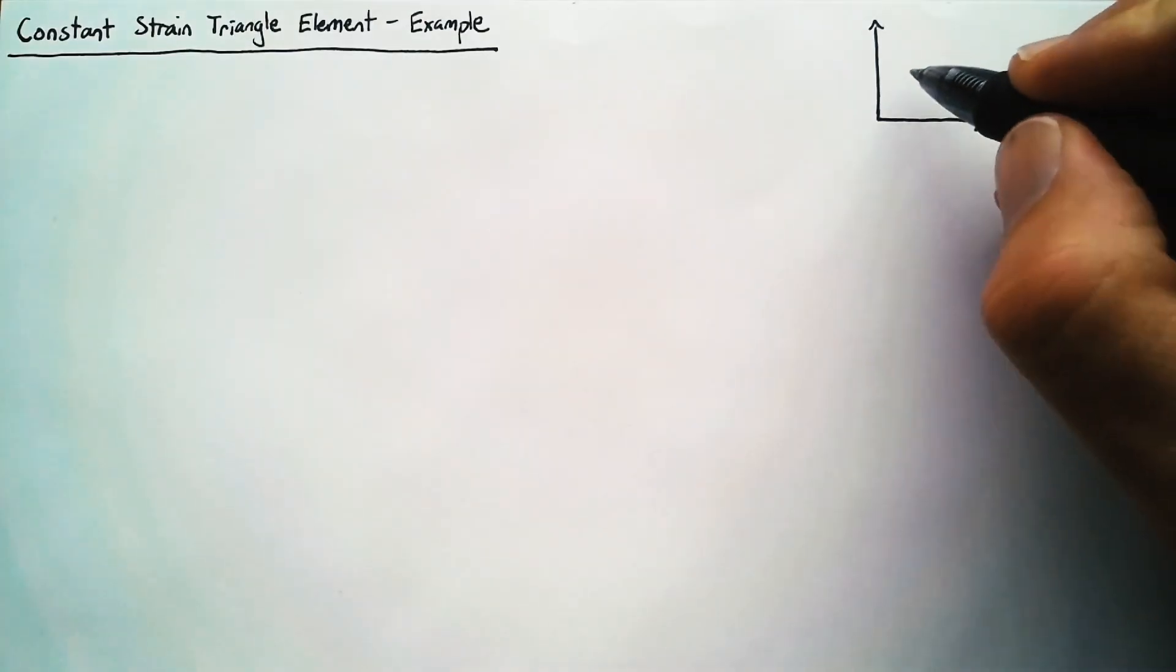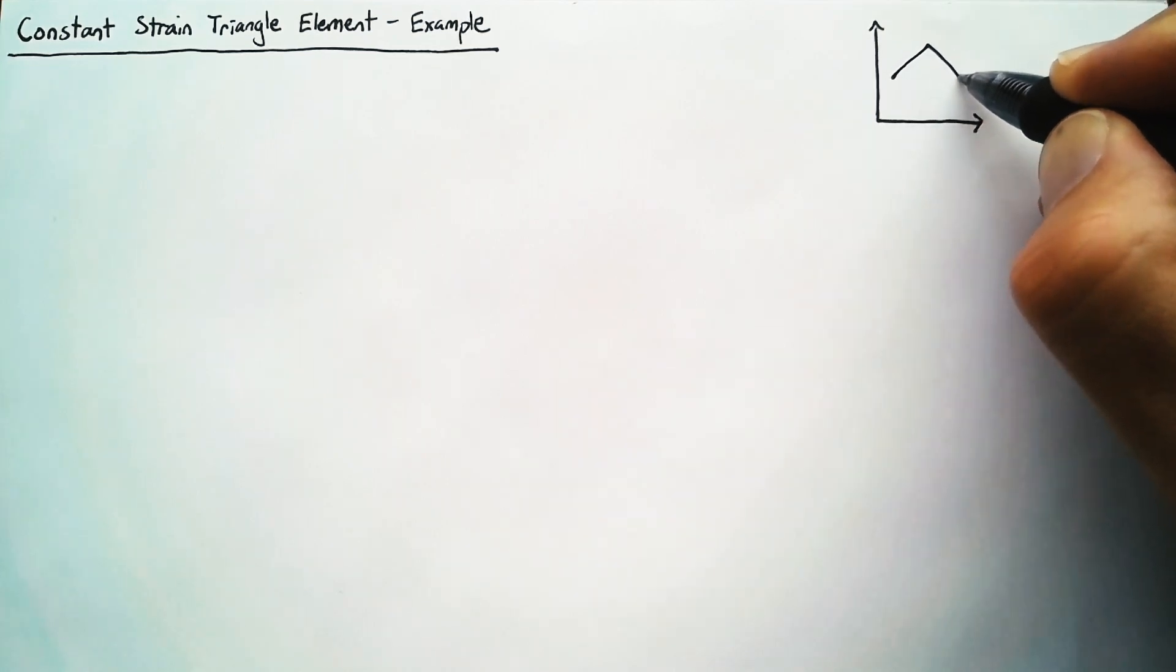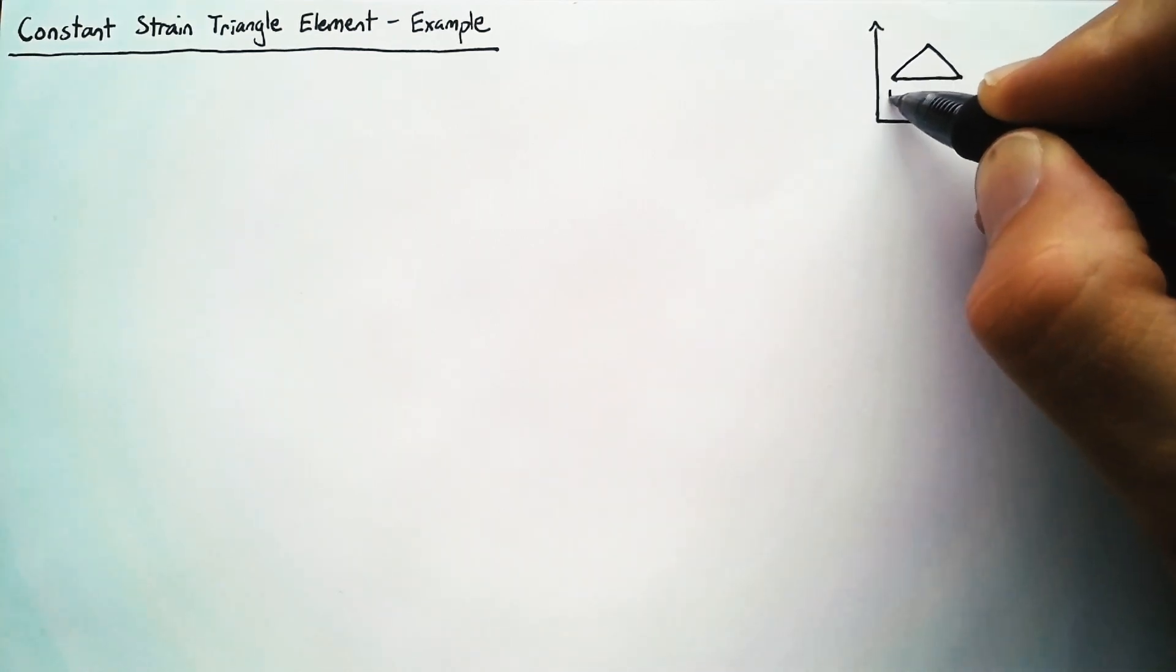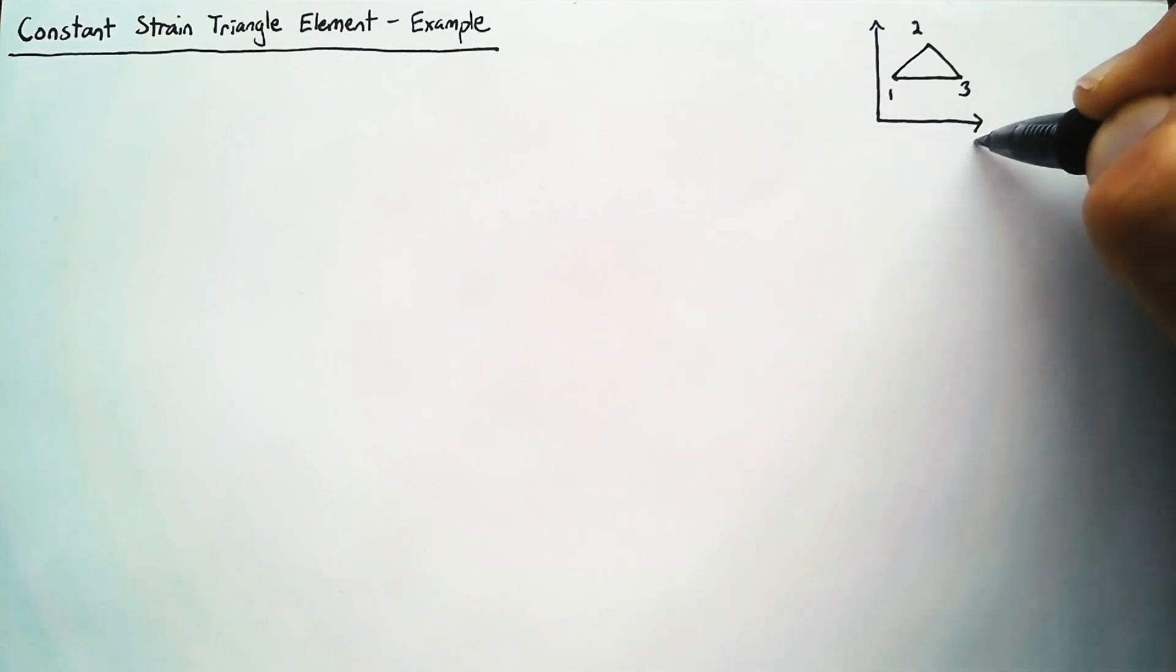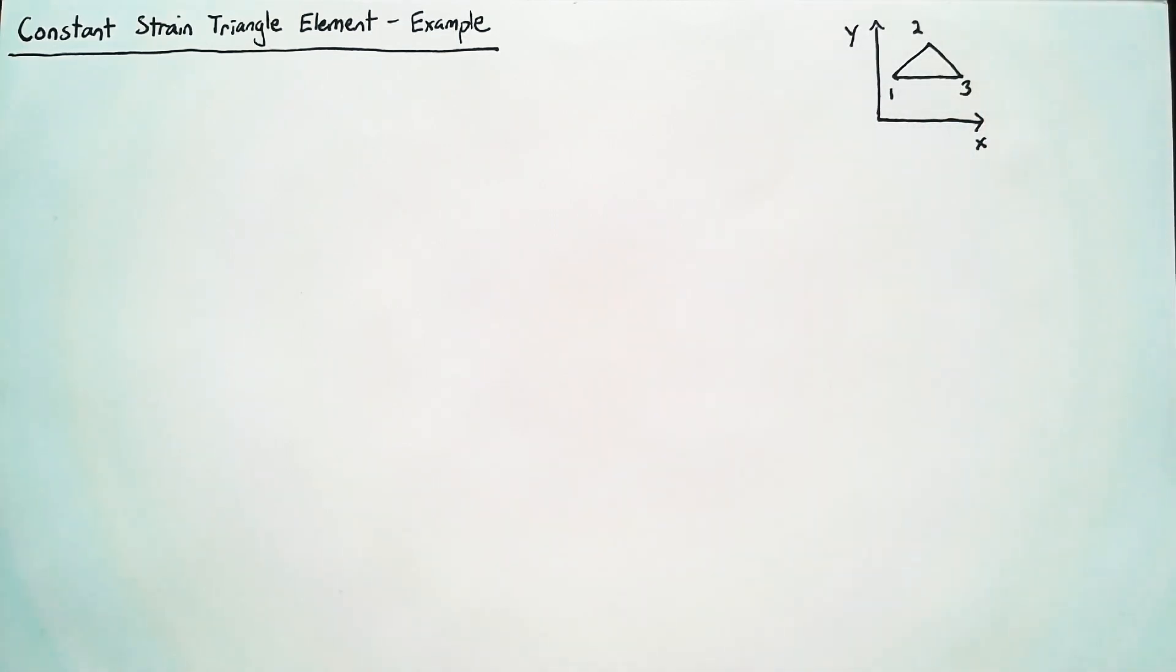In any case, the triangle that we're looking at is going to be relatively simple. Of course it has three nodes and we're defining this in x y space since our triangle always looks exactly the same in xi eta space.